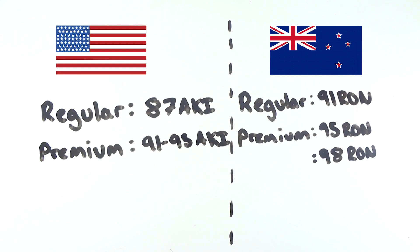Here in New Zealand, our numbers range from 91 RON being regular and 95 RON being premium, however 98 RON is also quite popular.